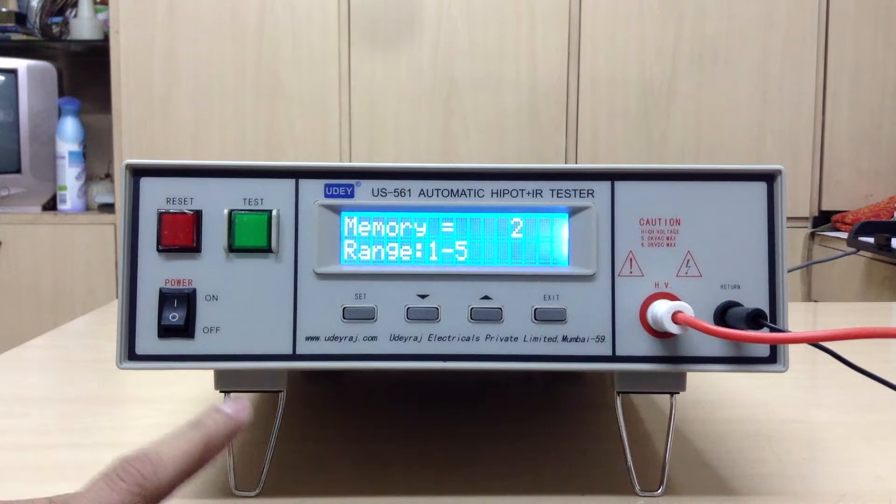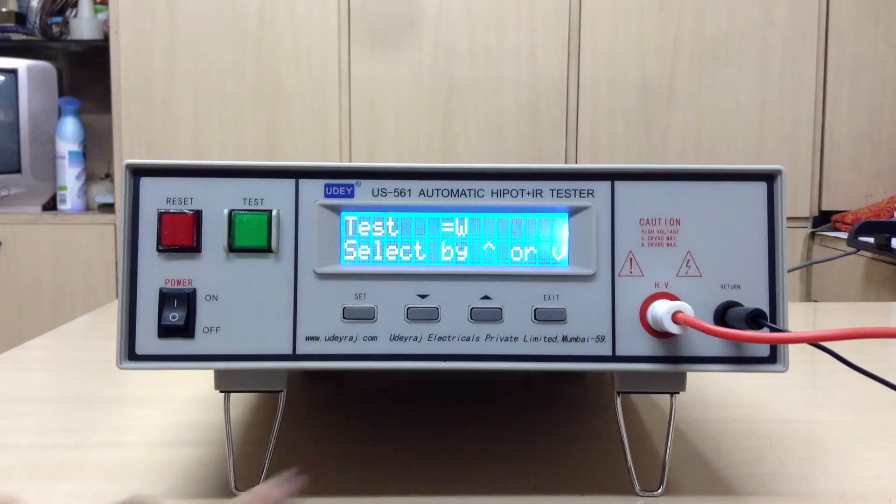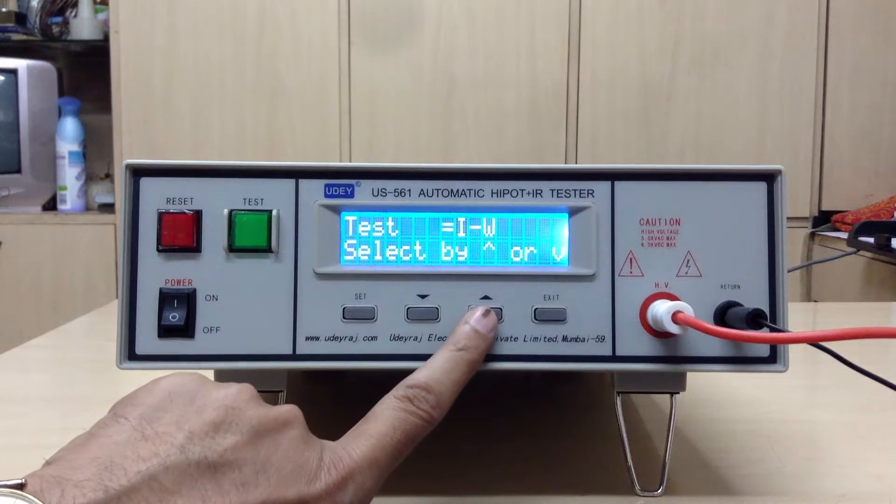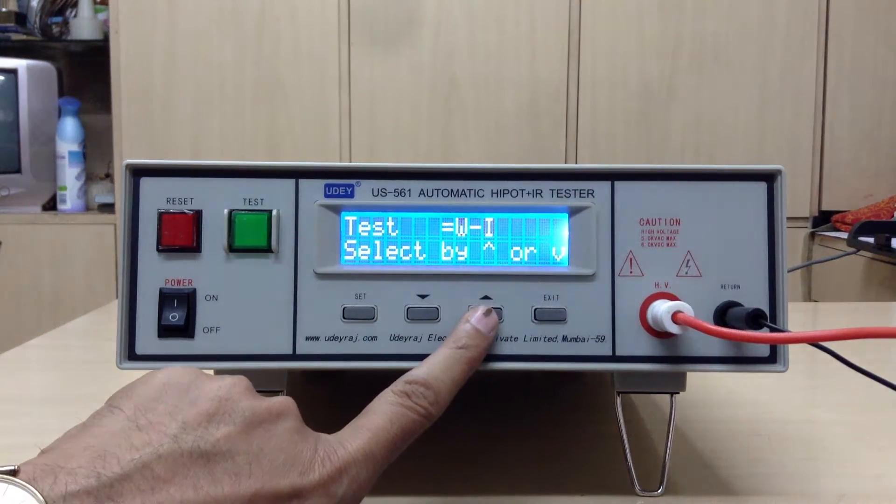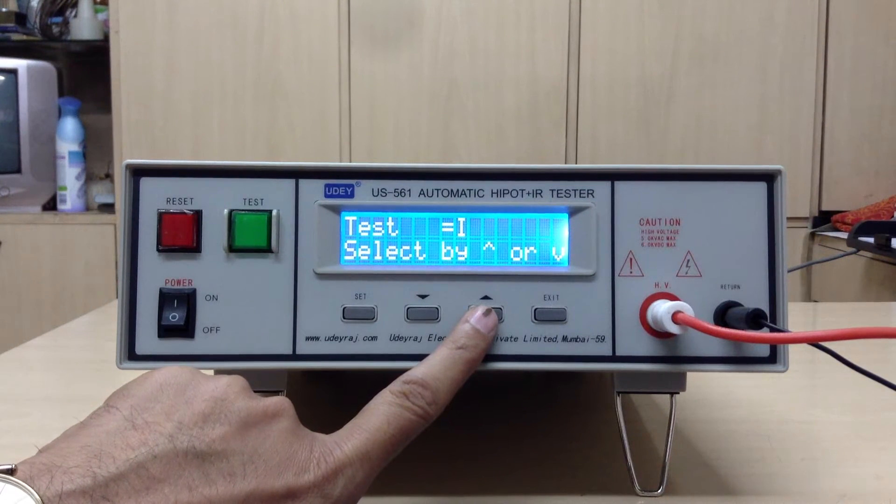In set, you have a memory range of 1 to 5 which you can store using the up and down key buttons. You save it and then take it forward. Your W stands for withstand test—IR and withstand, withstand and IR, or only IR. You can select whatever you want. In this case we select withstand test.